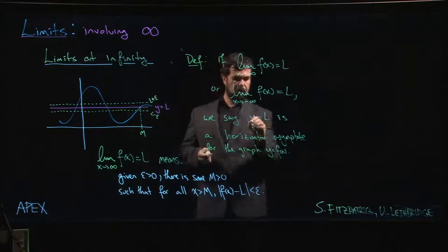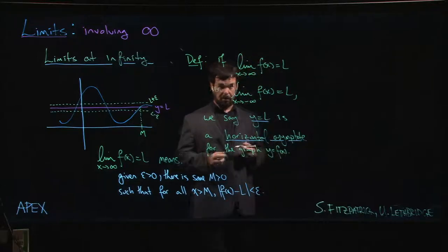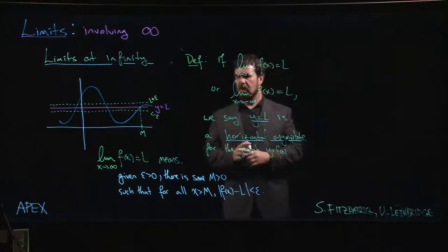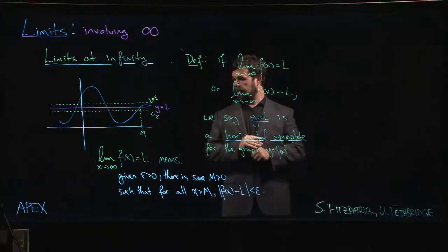So horizontal asymptotes have to do with limits where x is going to infinity rather than limits where f of x is going to infinity. So we'll look at a few examples, and then we'll move on.